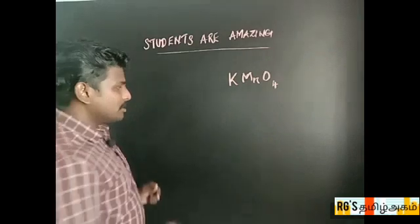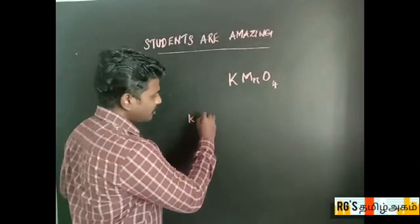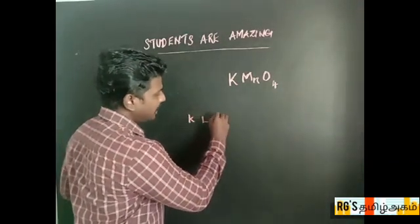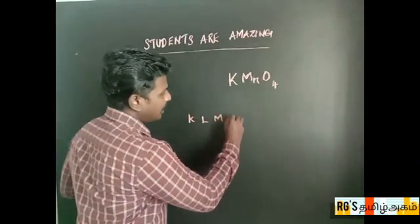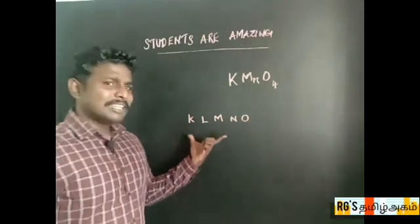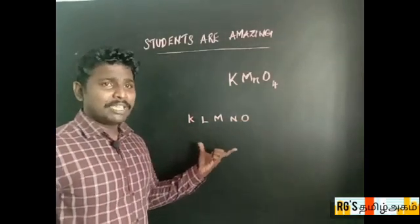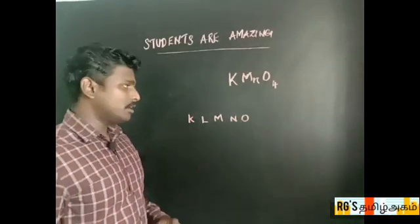I said: K, L, M, N, O. I thought — these are the five alphabets, and the formula must come from there.